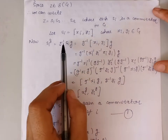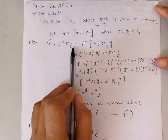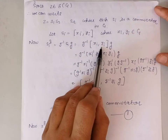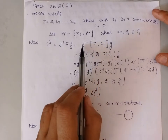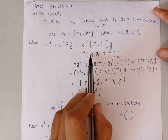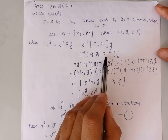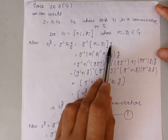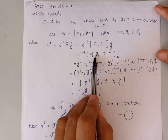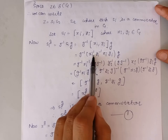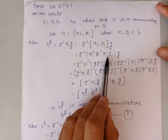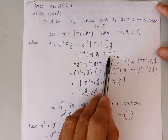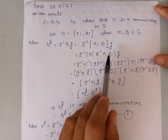Let us find G⁻¹SiG. Putting the value of Si, since Si is the commutator of elements Xi and Yi, by definition of commutator this expression becomes G⁻¹·Xi⁻¹·Yi⁻¹·Xi·Yi·G. Now, we can introduce identity elements: identity can be written as G·G⁻¹. In the same way, we can introduce G·G⁻¹ between various terms and also between Xi and Yi.